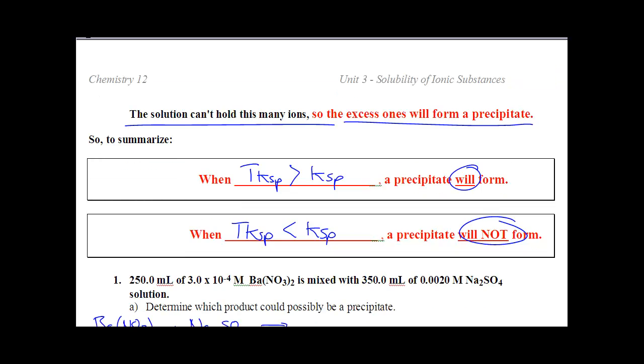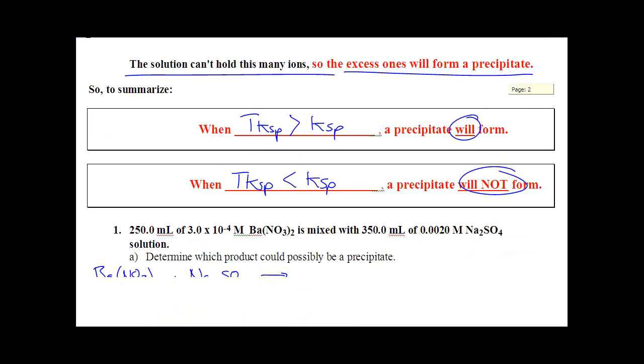So there are two options here. If the trial KSP is bigger than the real KSP, yes, you will have a precipitate. If the trial KSP is smaller than the real one, then that means you don't have enough ions to saturate the solution, and you won't form a precipitate. So let's do a real question, start to finish, and we'll call it a day.